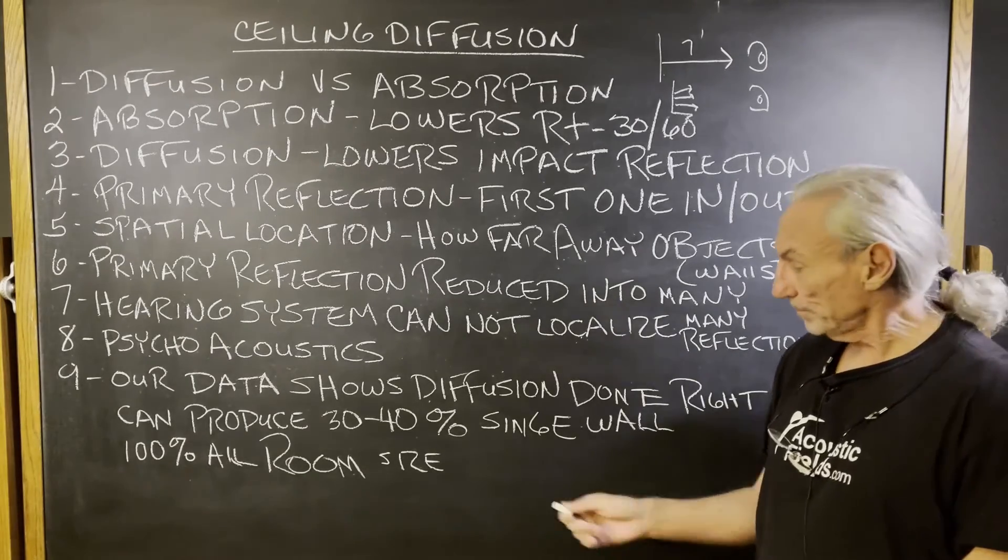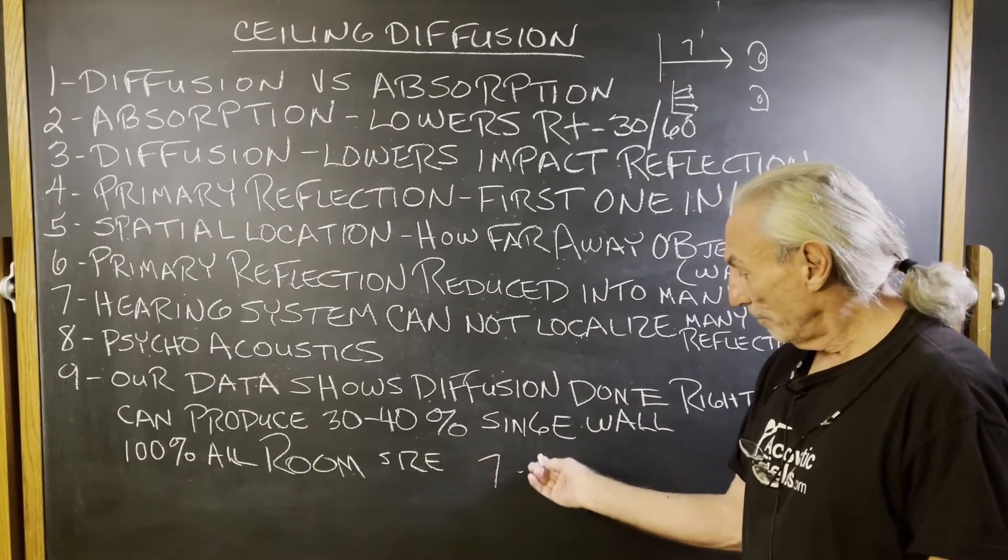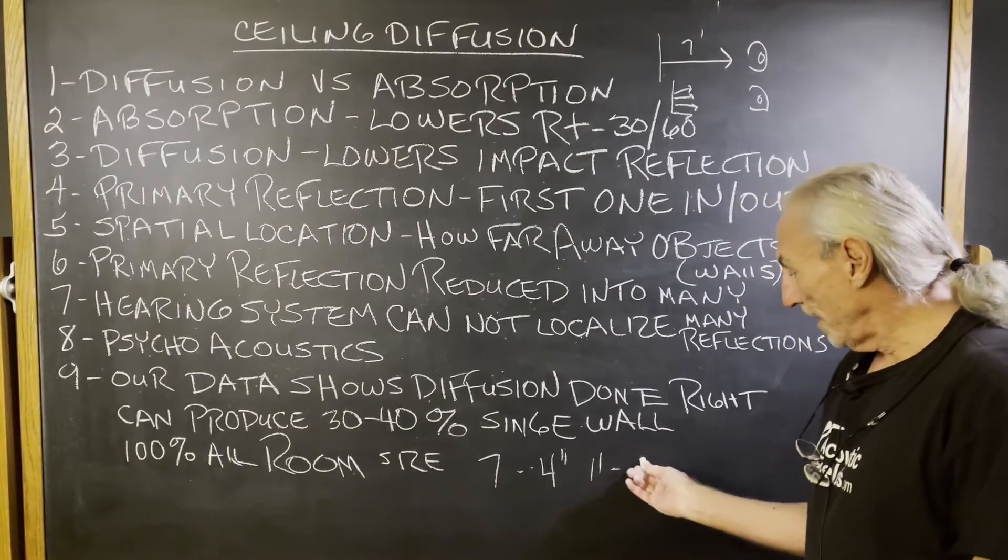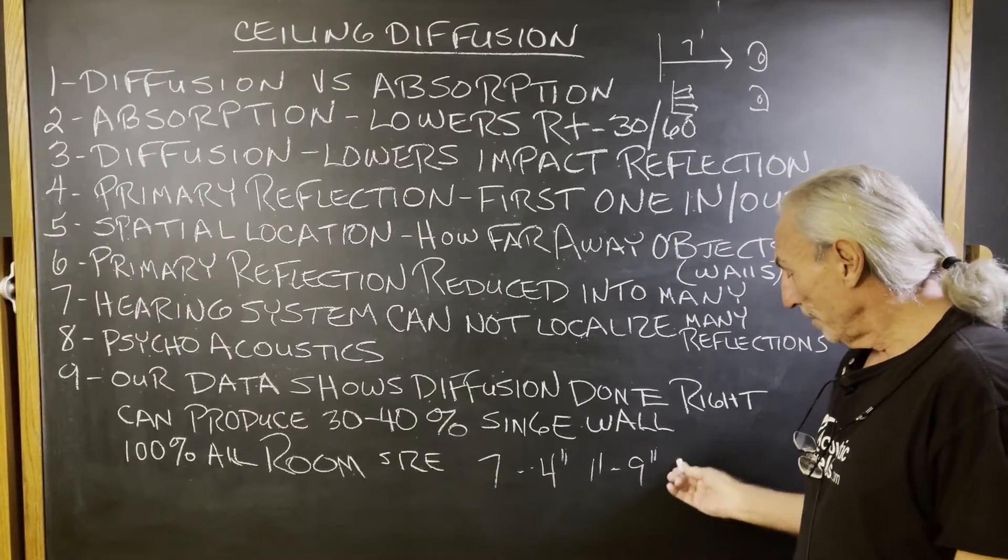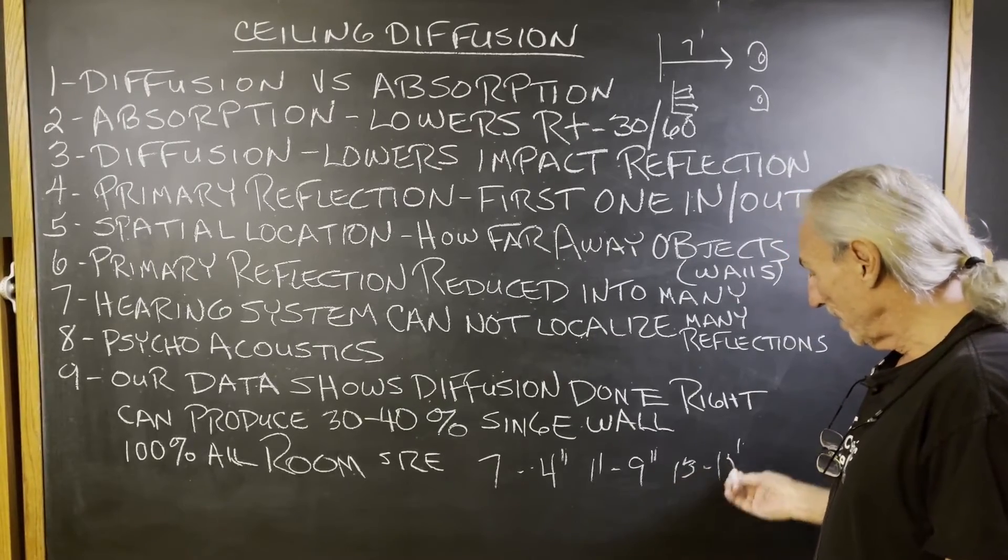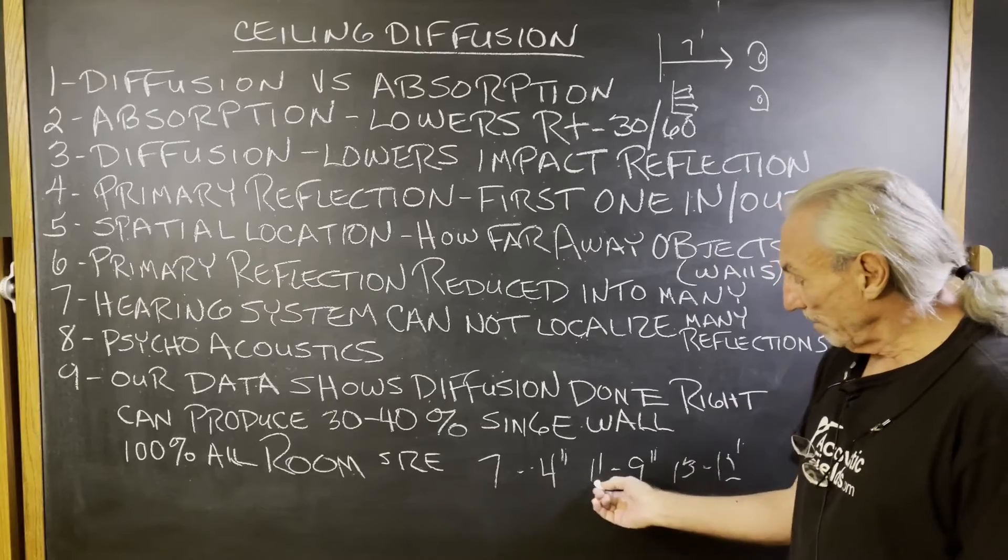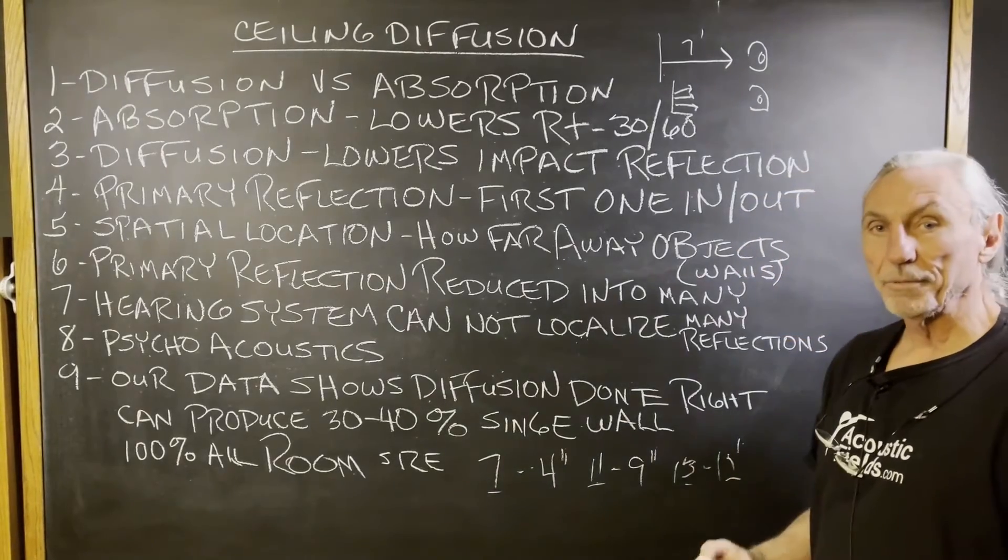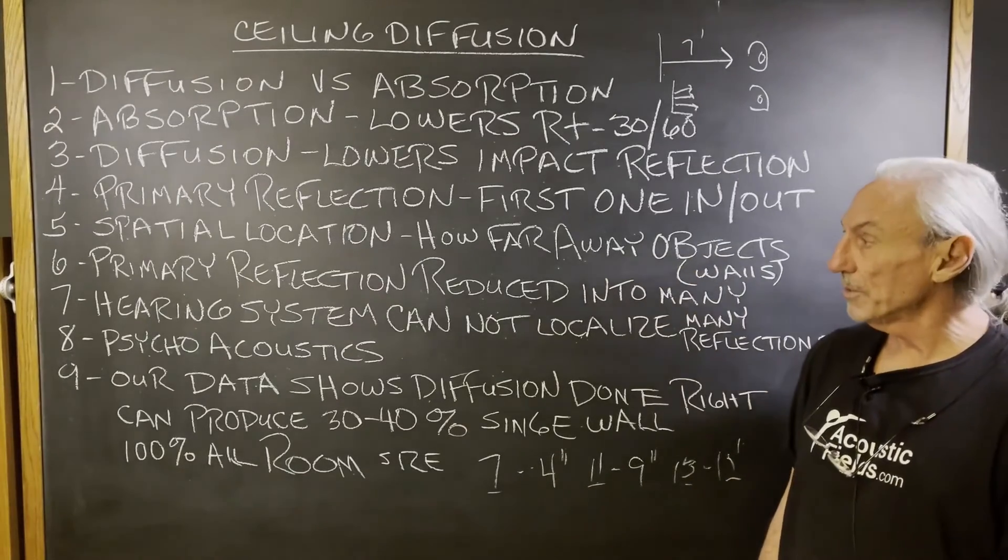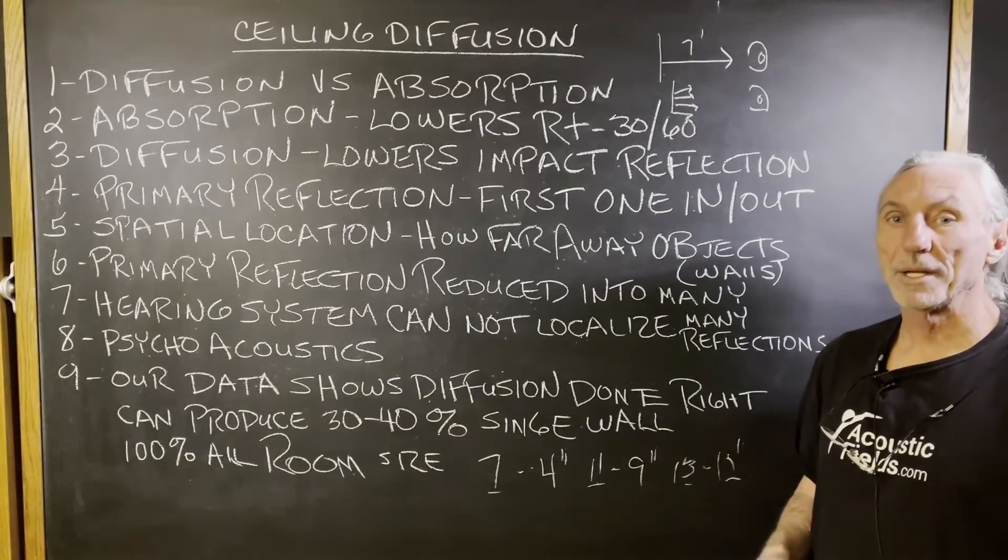A prime 7 is 4 inches deep. 11 is 9 inches. 13 is 12 inches deep. So you can see as you go up in prime number, the depth of the diffuser increases. So you have to calculate all that into the situation. But it's a wonderful technology.